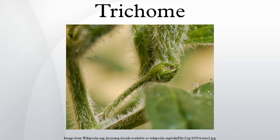Plants may use trichomes in order to deter herbivore attack via physical and or chemical means. However, some organisms have developed mechanisms to resist the effects of trichomes. The larvae of Heliconius charithonia, for example, are able to physically free themselves from trichomes, are able to bite off trichomes, and are able to form silk blankets in order to navigate the leaves better.